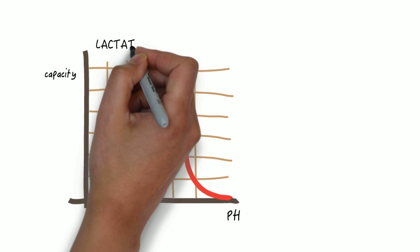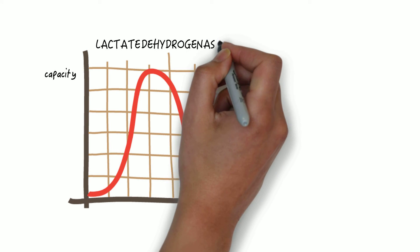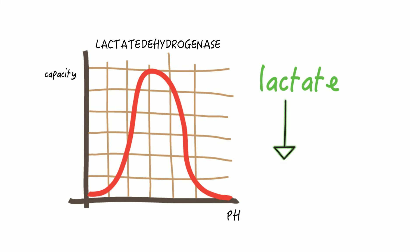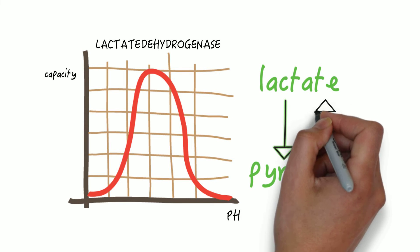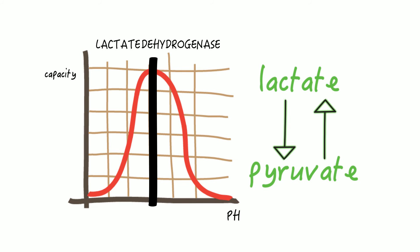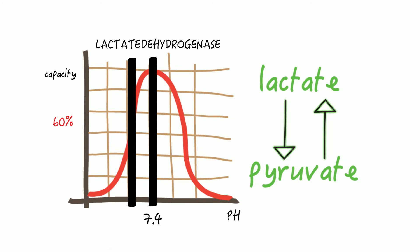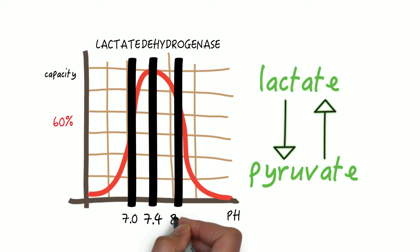Let's take an example. The enzymatic capacity of lactate dehydrogenase, which is an enzyme that converts lactate to pyruvate and vice versa, outside of physiological pH of 7.4, drops dramatically. Both if the pH is too high and the pH is too low, as you can see on this curve. So as you can see, the enzymatic capacity of lactate dehydrogenase drops below 60% if the pH is below 7 or above 8.